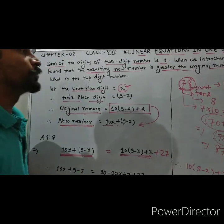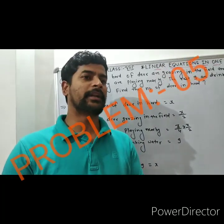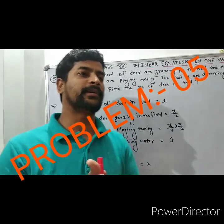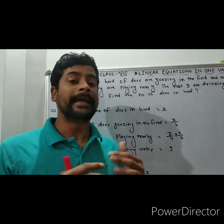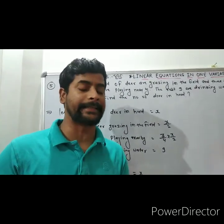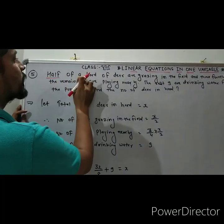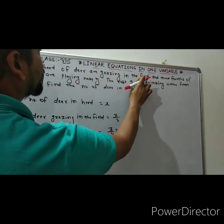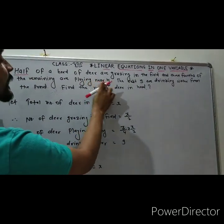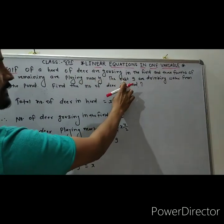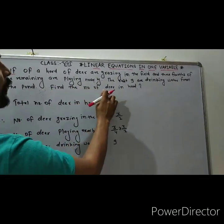Now we will come to question number 5. Concentrate your mind on question number 5 — it is also very very important and this question always comes in your SA1 and SA2 examination of class 8 standard. Half of the herd of deer are grazing in the field and three-fourths of the remaining are playing nearby. The rest 9 are drinking water from the pond. Find the number of deer in the herd.